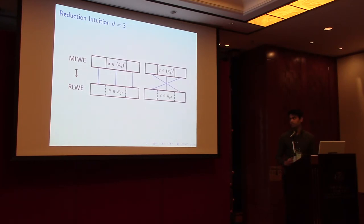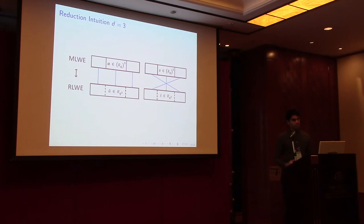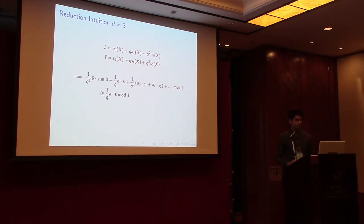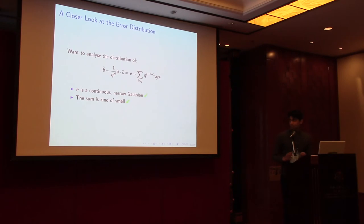The reduction aims to send uniform module elements to uniform ring elements, map secrets in a reversible way, and produce a valid noisy product B tilde of A tilde and S tilde with a continuous Gaussian error of narrower width. For the case D equals 3: we set the lower bits of A tilde's coefficients to be the bits of the first polynomial, the middle bits to the middle polynomial, and the upper bits to the final polynomial, with S treated in reverse. Concretely, A tilde equals A0 plus Q times A1 plus Q squared times A2, and S tilde equals S2 plus Q times S1 plus Q squared times S0.